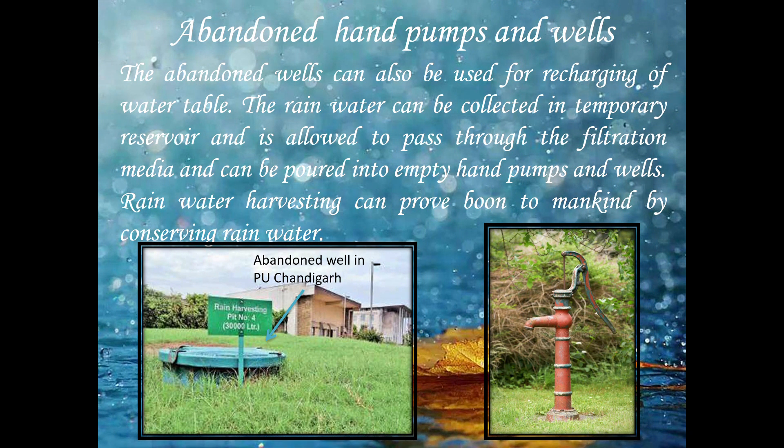Abandoned hand pumps and wells can also be used to recharge the underground water table. Any empty well can be used as a recharge structure. Rainwater can be collected in a temporary reservoir, passed through filtration media, and then poured into an empty hand pump or well, since these are already in contact with the underground water table. For example, at Punjab University Chandigarh, rooftop water is collected, passed through filtration media, and poured into an abandoned well. Such structures can be utilized wherever they are available.